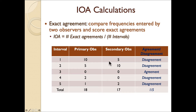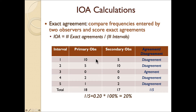In exact agreement, we compare the frequencies entered by two observers and score exact agreements. In interval one, there is a disagreement because the scores are not exact. Interval two, a disagreement. Interval three, there is an agreement. Intervals four and five are disagreements. So if we calculated this IOA, it would be one divided by five, which gives you 20% — a very conservative measure. In fact, I would say overly conservative, because even though there's a pretty significant discrepancy here, both observers did record some behavior that seemed to correspond across each of them. Maybe they should get partial credit.